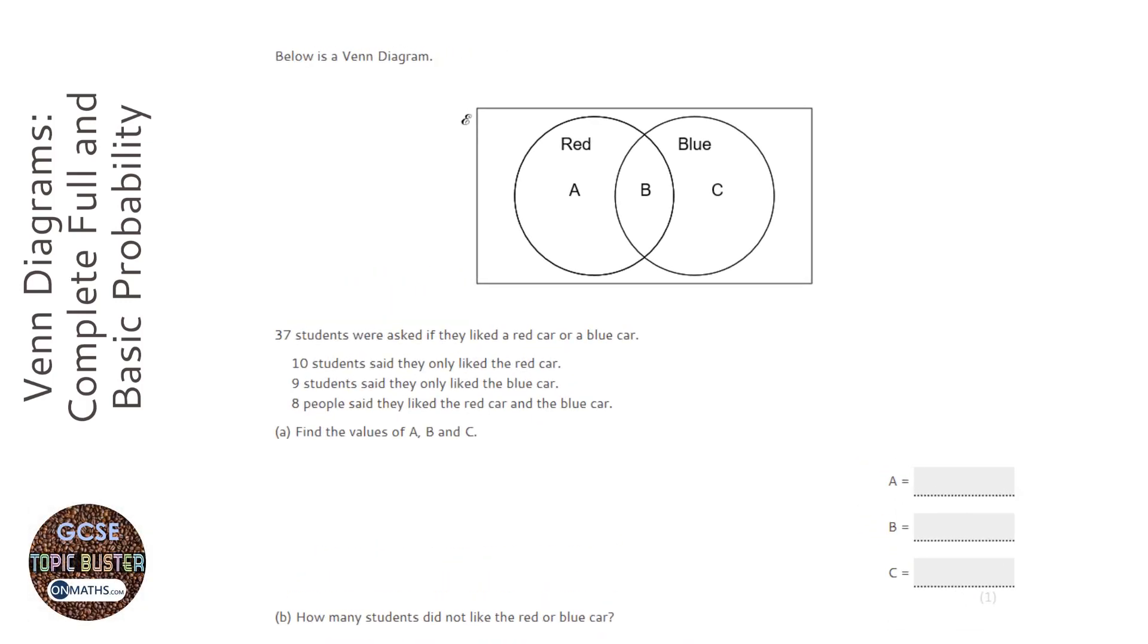Okay, so this question is about Venn Diagrams, and it says there's 37 students in total. It says 10 only liked the red car, 9 only liked the blue car, and 8 said they liked the red car and the blue car.